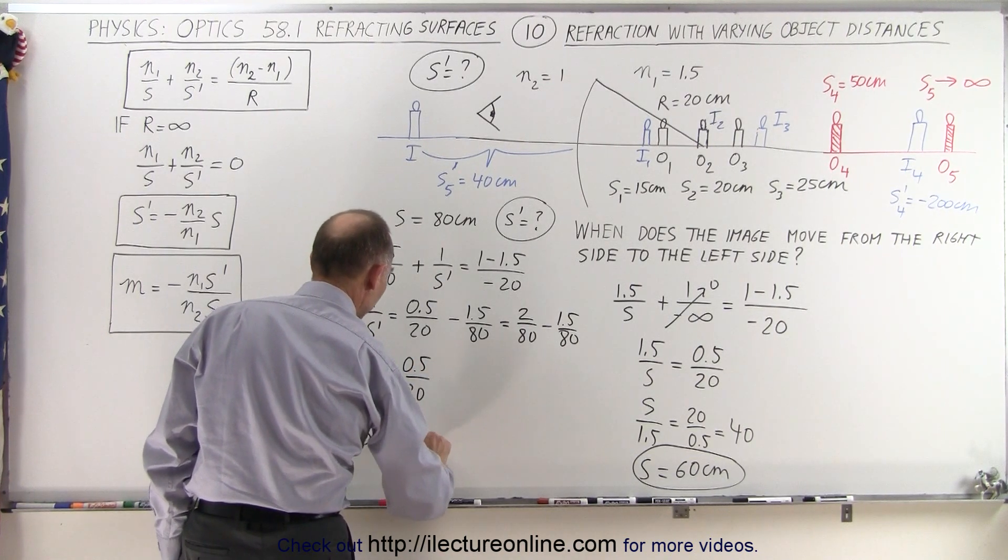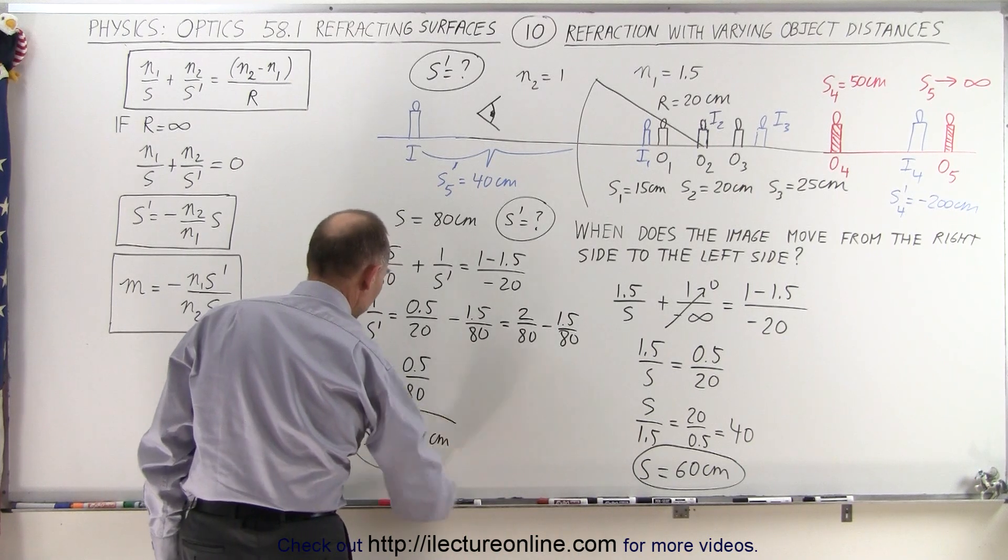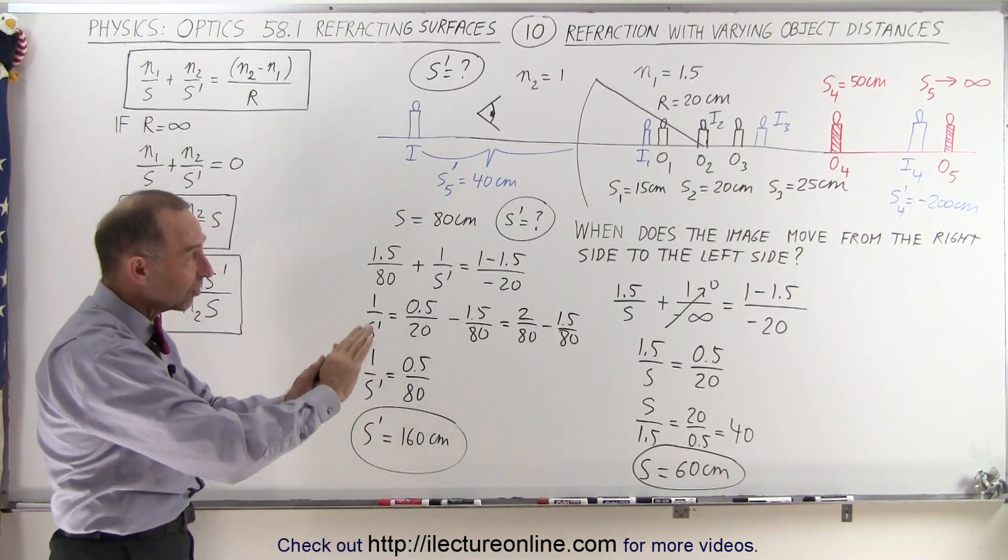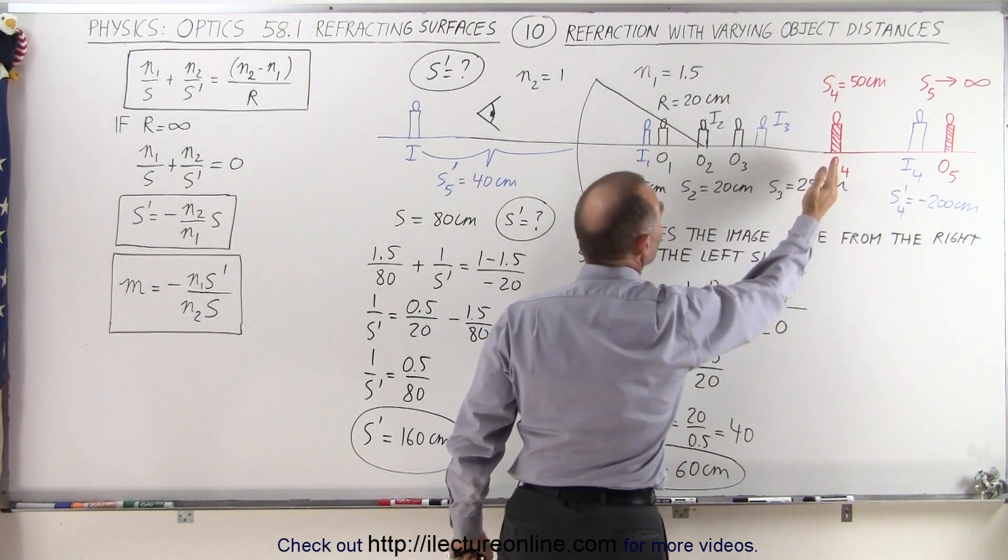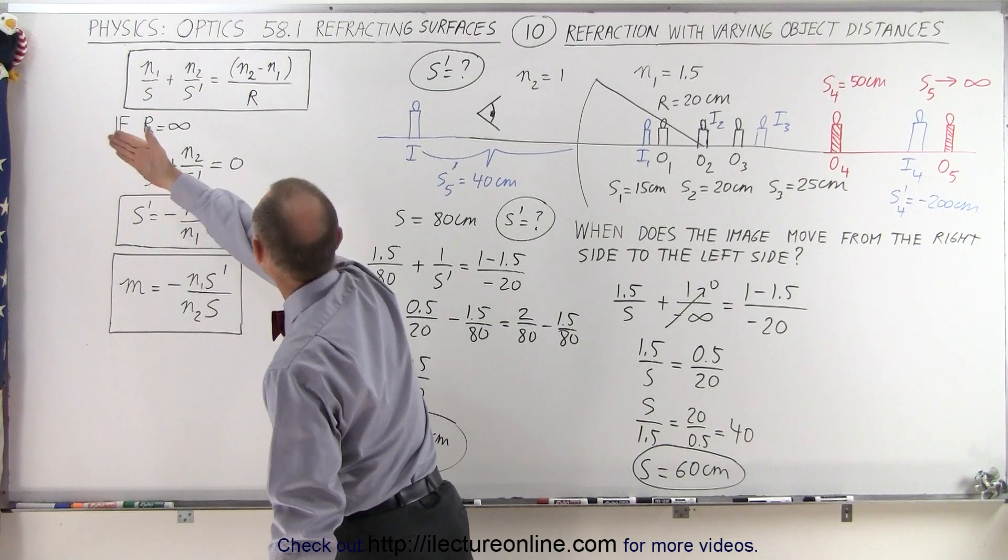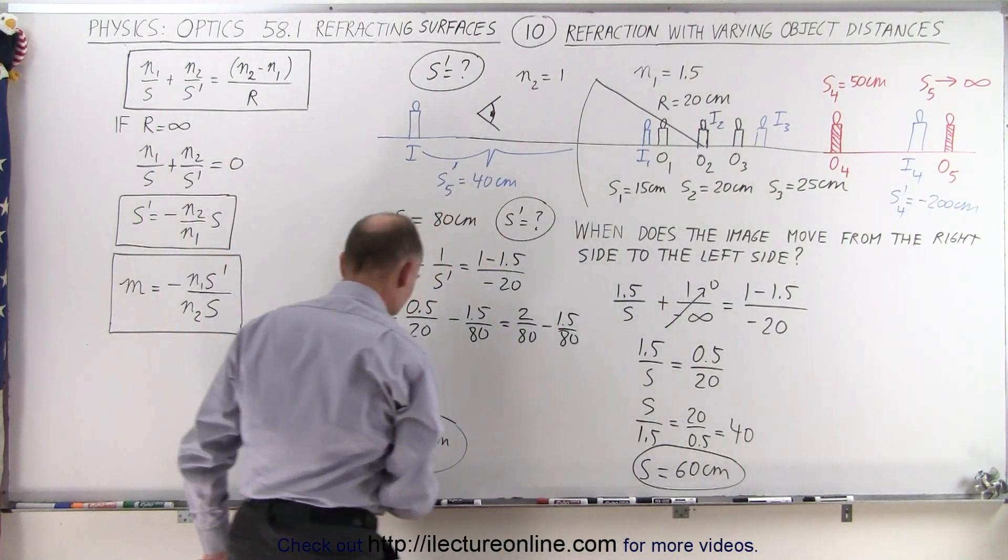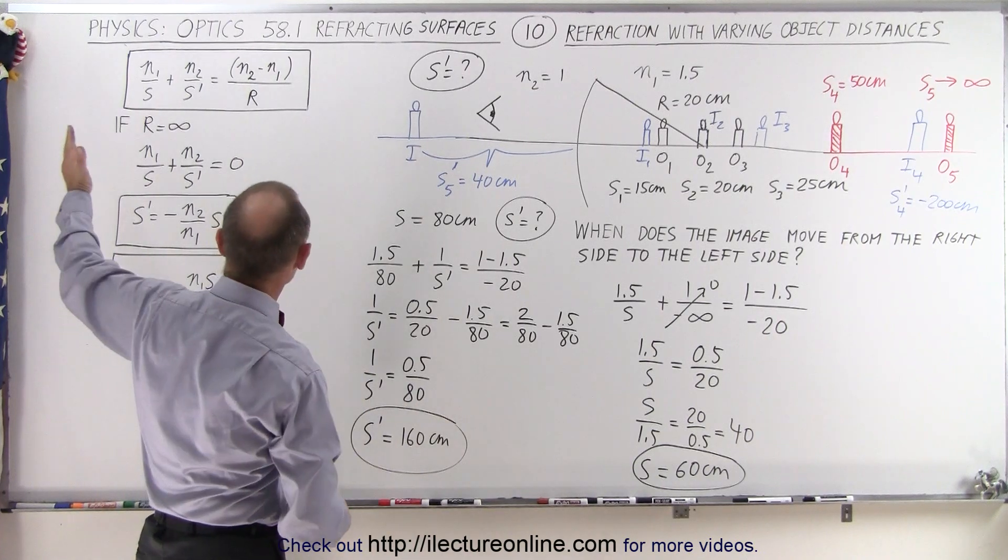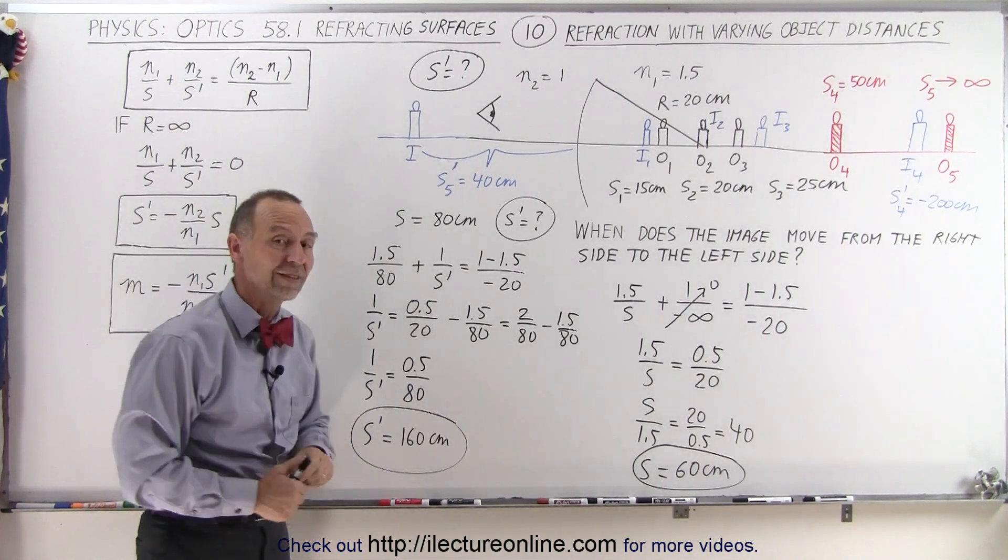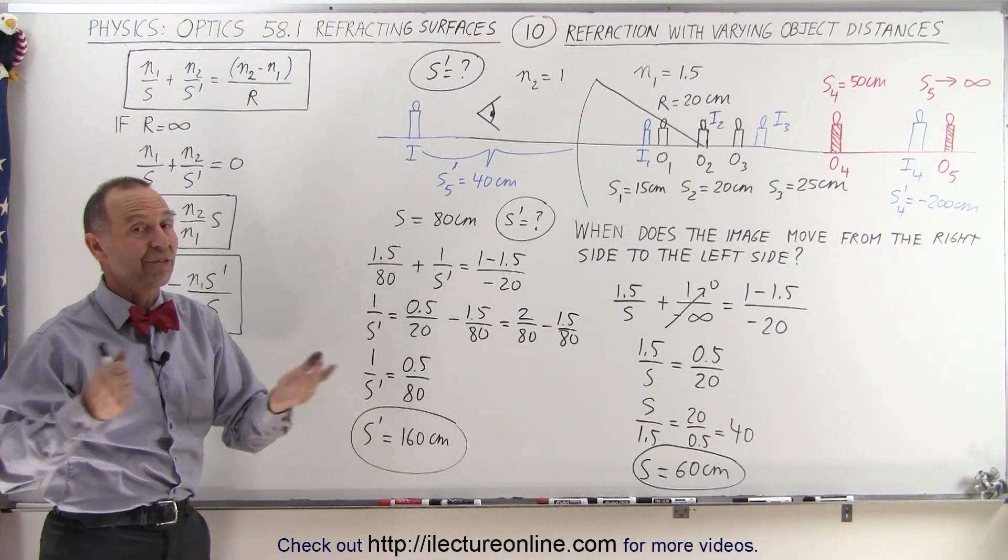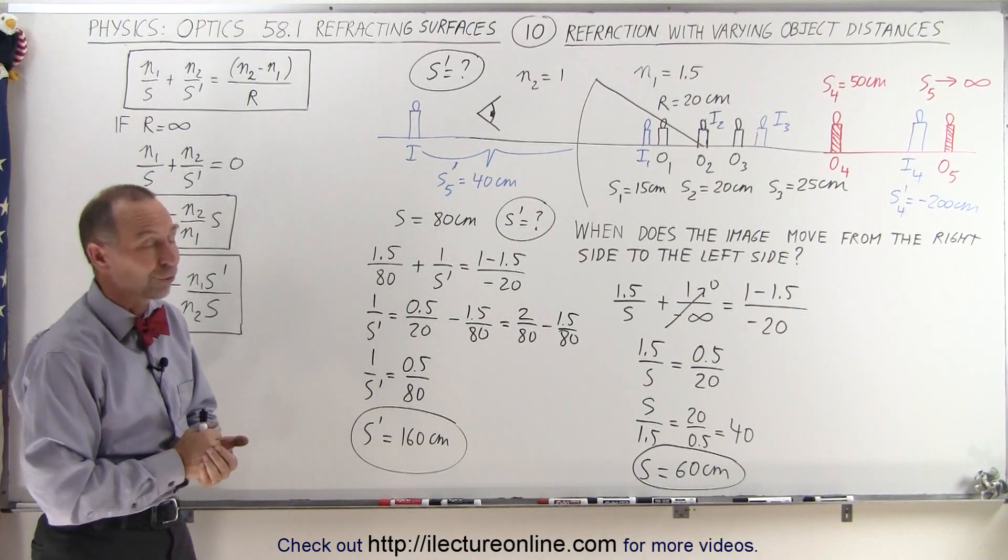So what happens then is, as the object moves past the 60 centimeter mark over here, the image will go from negative infinity all the way to positive infinity, and then it starts moving back in. By the time the object reaches a distance of 80 centimeters, the image has moved to a distance of 160 centimeters on the left side of the boundary. And that's how refraction works with a curved surface like that.